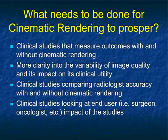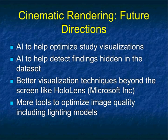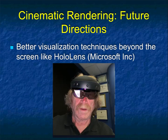Now, for cinematic rendering to prosper, we need to have clinical studies that measure outcomes with or without cinematic rendering. We need more clarity into the variability of image quality and its impact on clinical utility. We need clinical studies comparing radiologists' accuracy with or without cinematic rendering. We need clinical studies using at the end user — even if it doesn't change the radiologist's interpretation, if the end user changes their management, it becomes very, very important. I think AI is going to help us optimize visualizations and use texture mapping to detect lesions in the dataset. I believe the visualizations will change from looking at a screen to using HoloLens, and more tools to optimize image quality including lighting models are going to come along. That's something we will push in 2021.